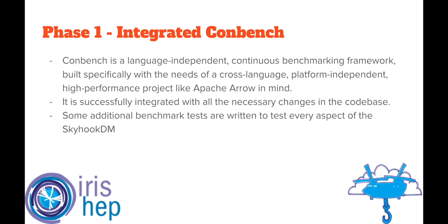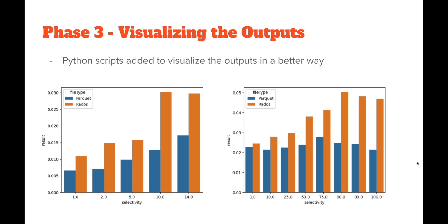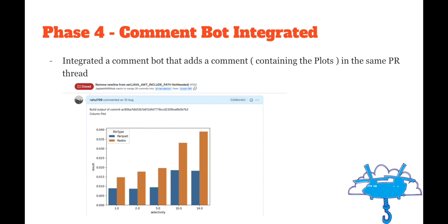I wrote all the benchmarks needed to test the performance-critical parts of SkyhookDM. With the benchmarking framework ready, I started working on the automation part. With the help of GitHub Actions, I made a few workflows that execute all the benchmarks whenever a PR is raised and store the results in a different repository. The stored outputs are further utilized by Python scripts to generate comparison plots that are easy to interpret. You can see some of the visuals in this slide. As an enhancement, I further added a command bot that posts the output in the same PR thread, making it much easier for maintainers to get the results in one place — very helpful for new contributors raising pull requests for the first time.